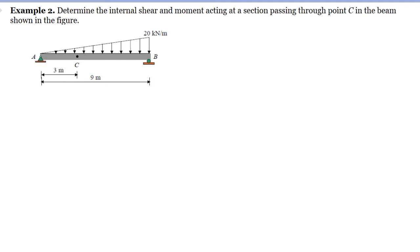Example number 2: determine the internal shear and moment acting at a section passing through point C in the beam shown in the figure. We have a uniformly varying load with 0 at point A and 20 at point B. The first thing we are going to do is to compute for the reactions of the supports.